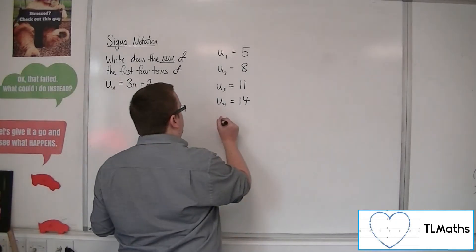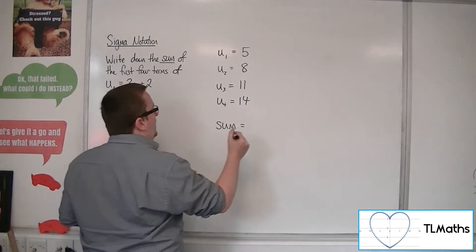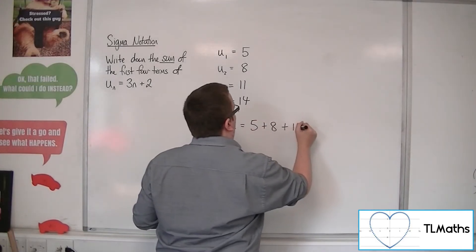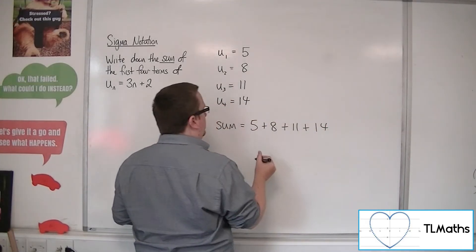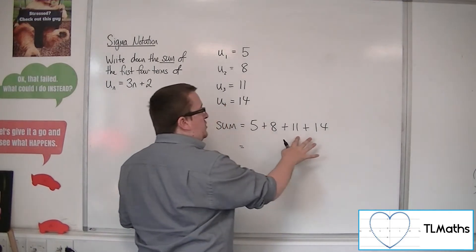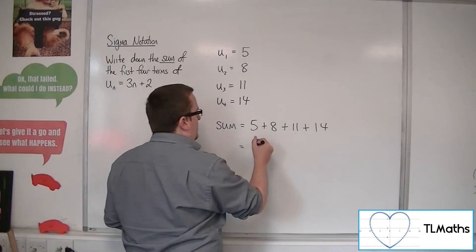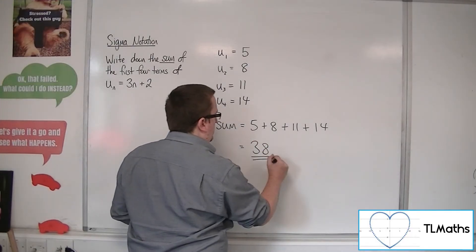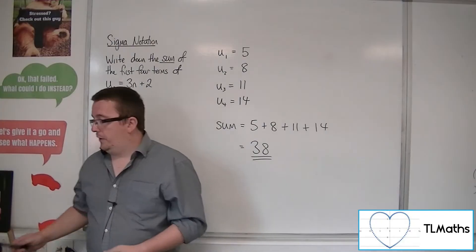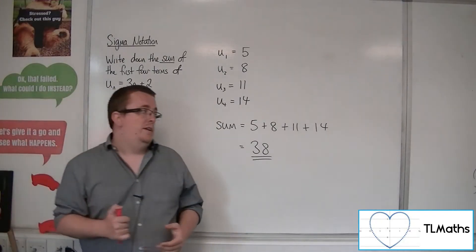The sum is adding them all together, so 5 plus 8 plus 11 plus 14. Now 14 and 11 is 25, so we have 30... 38. So 38 is the sum of the first four terms of that sequence.